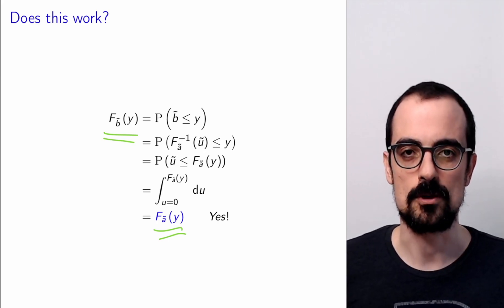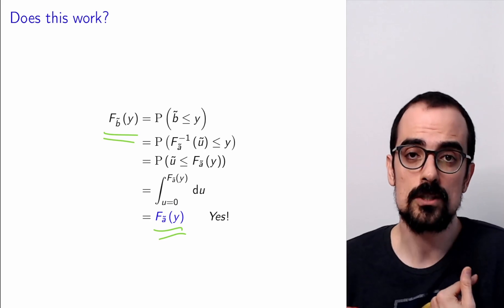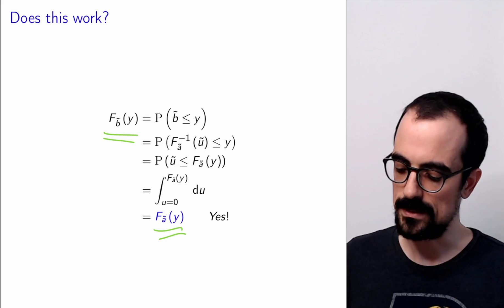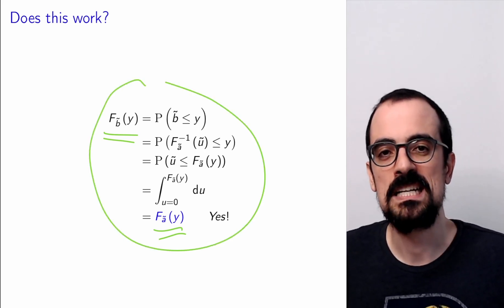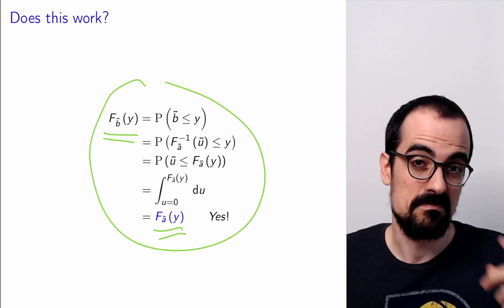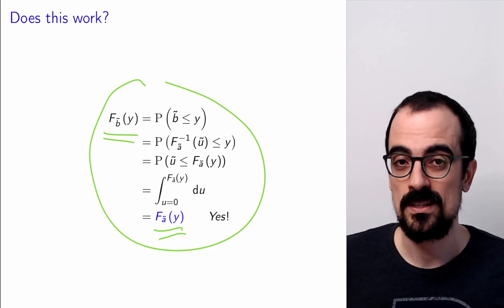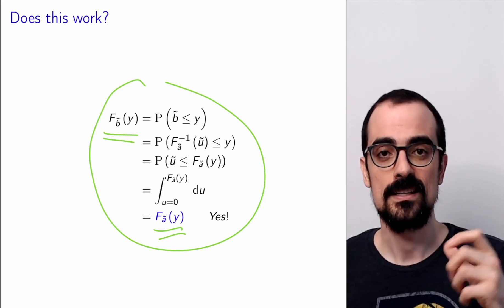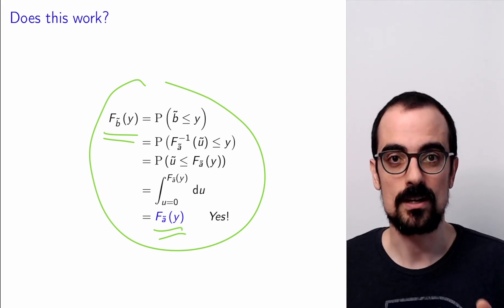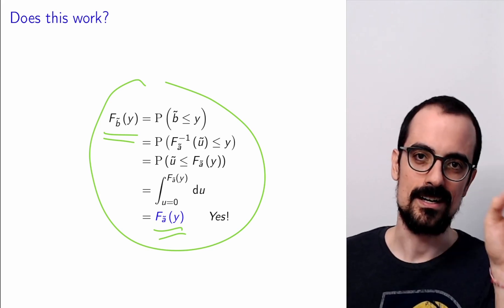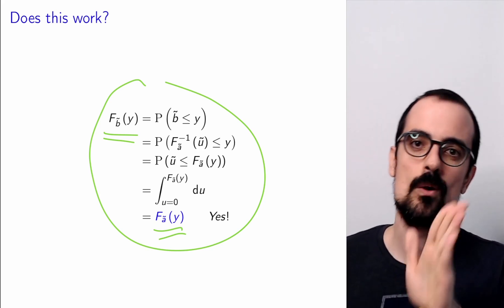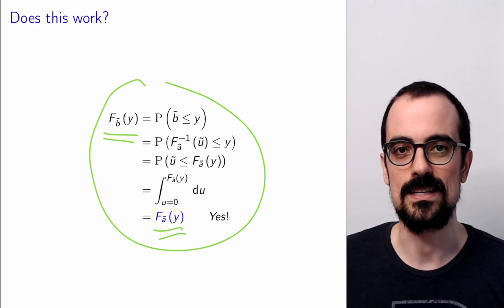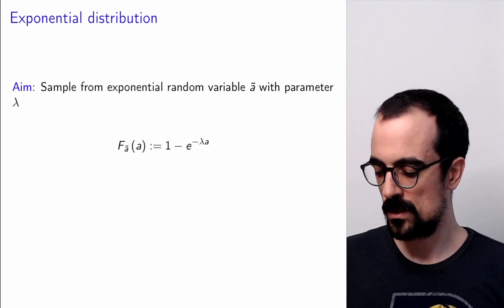When I learned about inverse transform sampling, they just told us to apply the inverse CDF and then showed this proof — and I was like, 'I guess that's true.' But I think it's very important to think in terms of the graph and understand why it actually works: you're mapping the uniform random variable so that the probability of landing in different intervals is exactly correct.